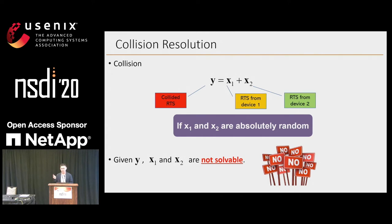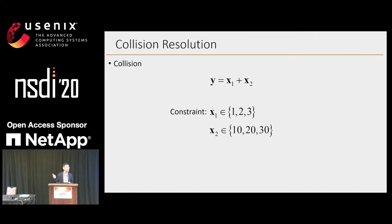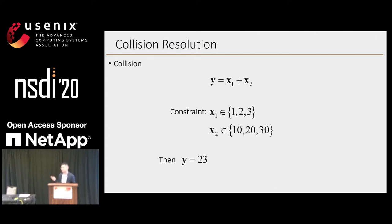But what if X1 and X2 are not random? Suppose we give two constraints: X1 belongs to {1, 2, 3} and X2 belongs to {10, 20, 30}. Now we know if Y equals 23, then X1 must be 3 and X2 must be 20.